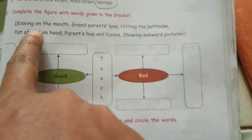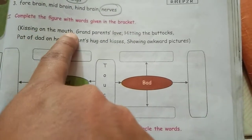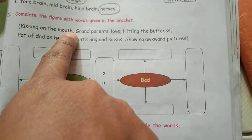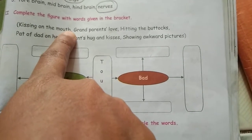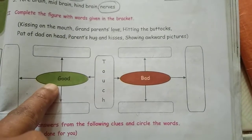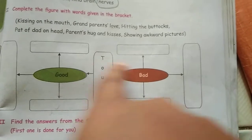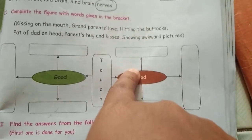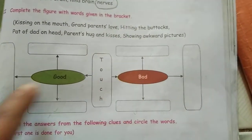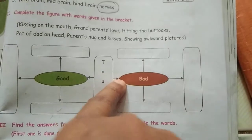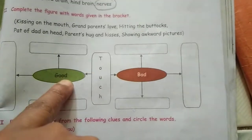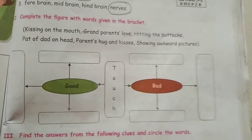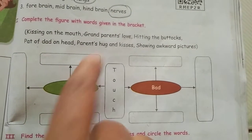So the first example: kissing on the mouth. What is it — a good touch or a bad touch? Just think and write. At the end of this video, I'll tell you the answer. So for your example, I'll tell you one.